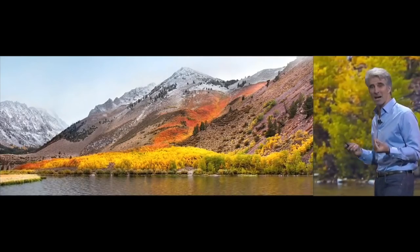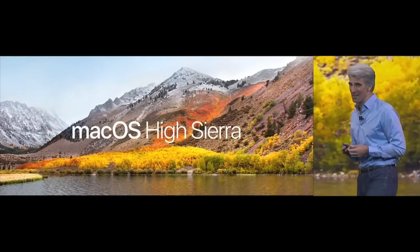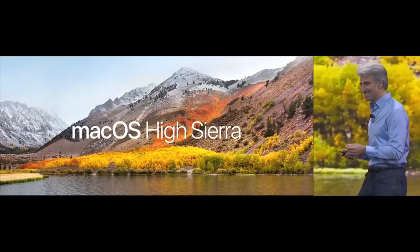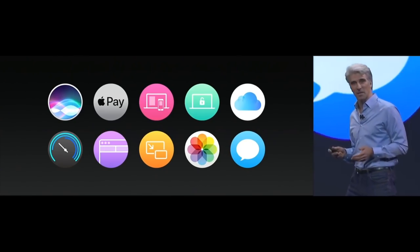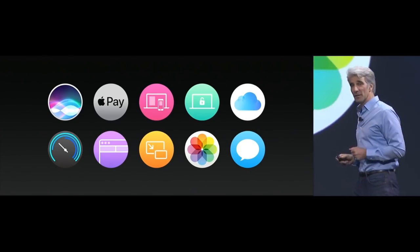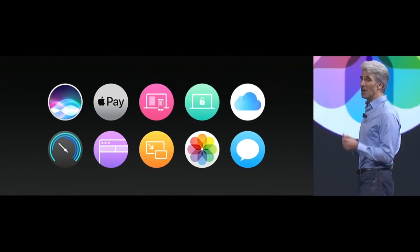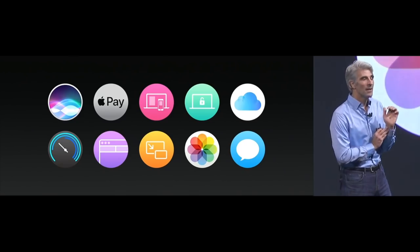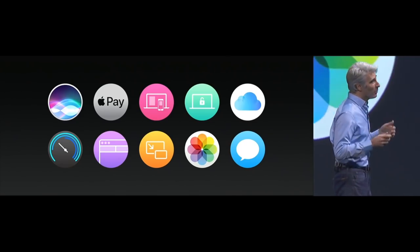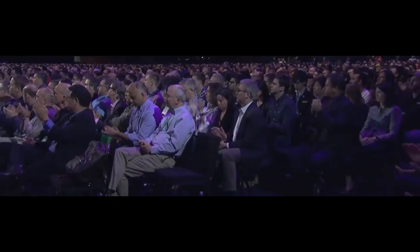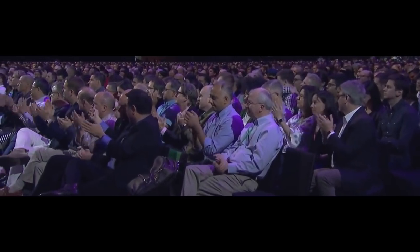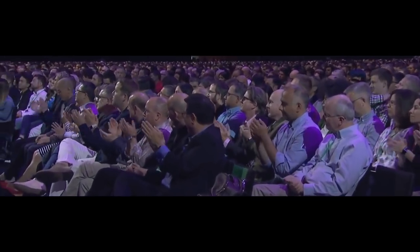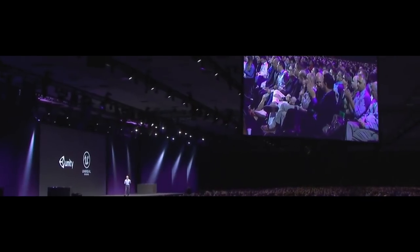Mac OS 10.13 High Sierra was released on September 25th, 2017, and focused on performance improvements and technical updates rather than new features. Notable changes included the Apple File System, Metal 2, support for HEVC and HEIF, and updates to Photos, Mail, Safari, Notes, and Siri. So that's it guys — I hope you enjoyed the history of Mac OS X. If you enjoyed the video, don't forget to leave a like. Thanks for watching, and I'll see you next time.